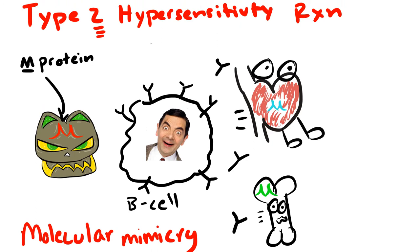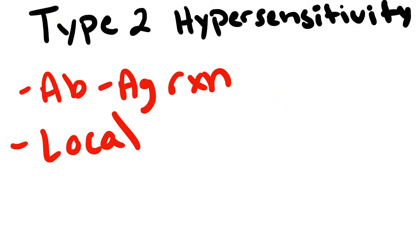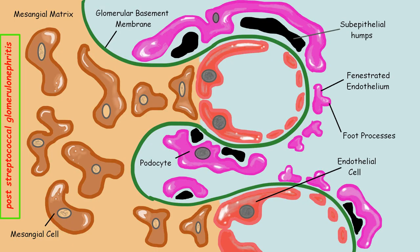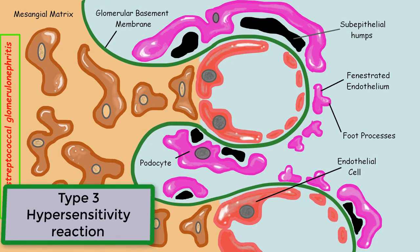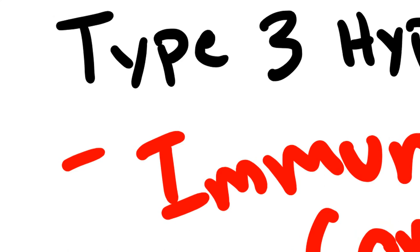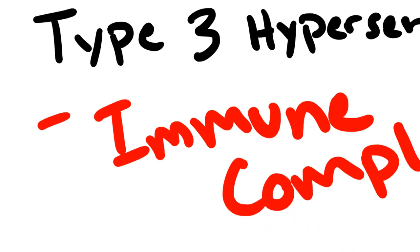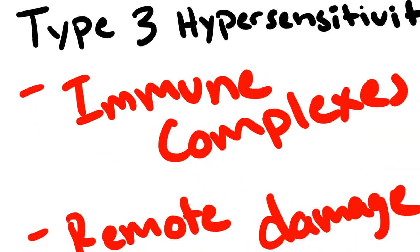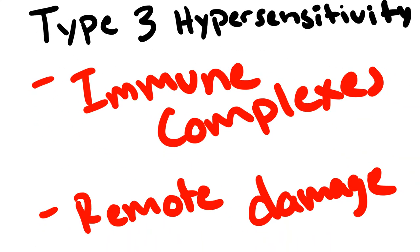Type II is defined as an antibody-antigen reaction that damages local tissues. Acute post-streptococcal glomerulonephritis is type III because antibody-antigen complexes circulate in the bloodstream and then get deposited in the glomeruli. Type III definition is preformed immune complexes that cause remote, not local, damage.